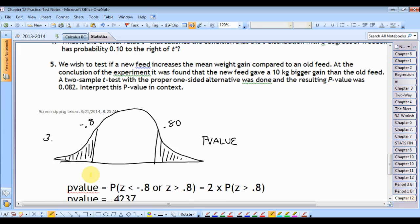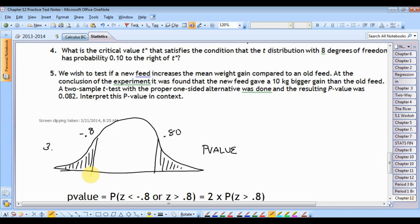Let's look at five. We wish to test if a new feed increases mean weight compared to the old feed. I think they're talking about barnyard animals here. At the conclusion of the experiment, it was found that the new feed gave a 10 kilogram gain, bigger gain than the old feed. A two-sample T-test with a proper one-sided alternative was done, and the resulting p-value was 0.082.